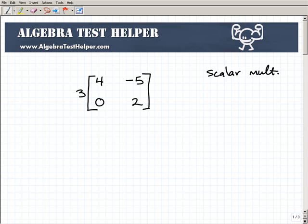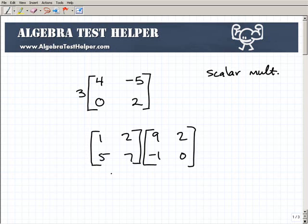Now that's different than multiplying two matrices together. So for example, let's suppose I had this, a matrix that was 1, 2, 5, 7, and I want to multiply that particular matrix by 9, 2, negative 1, 0. Okay, this is matrix multiplication. This is actually going to take a little bit of work. It's not overly difficult, but this is a totally different ballgame than scalar multiplication.